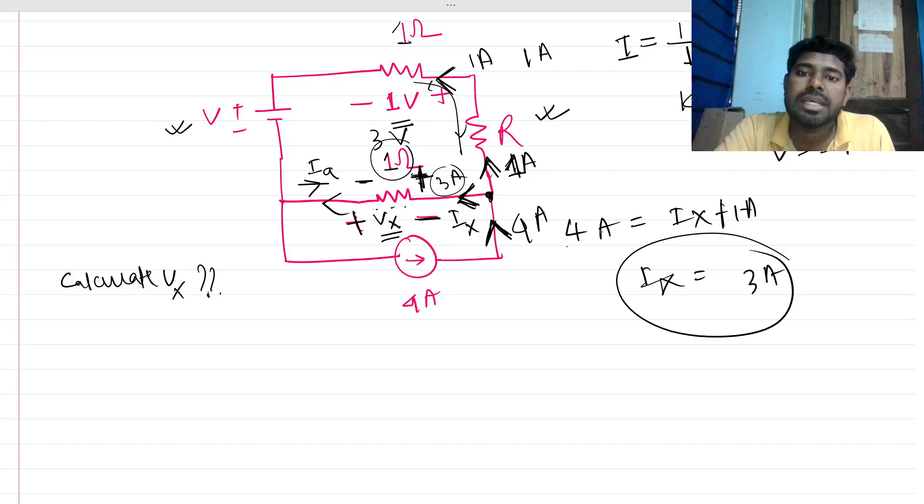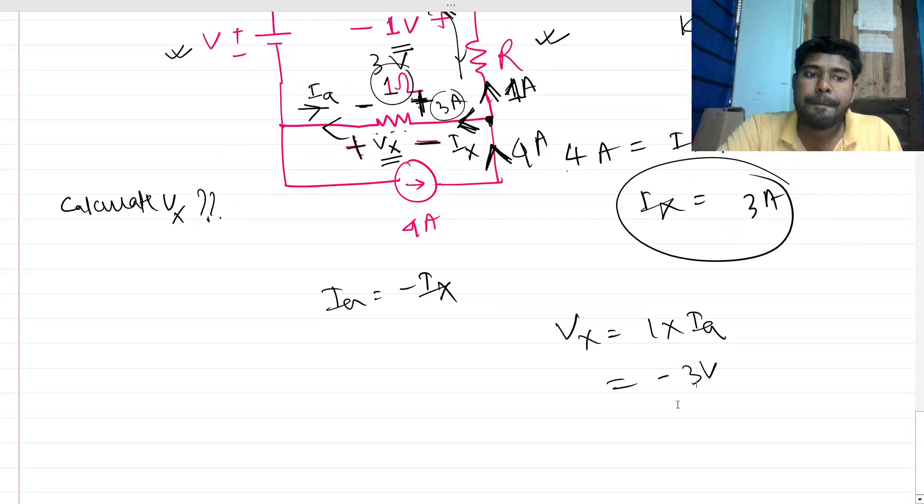Let's say IA. So IA is nothing but minus Ix, and vx is nothing but one into IA. So this is nothing but minus 3 volts. This is your answer.